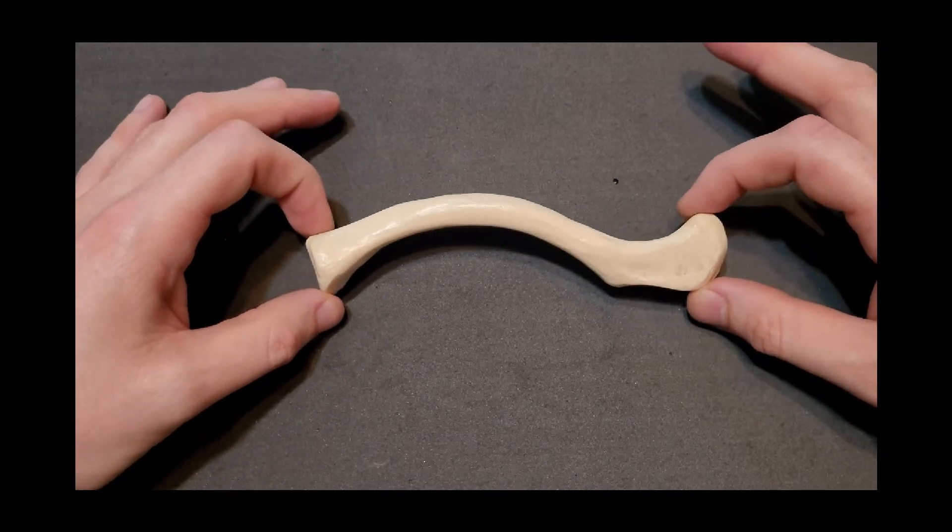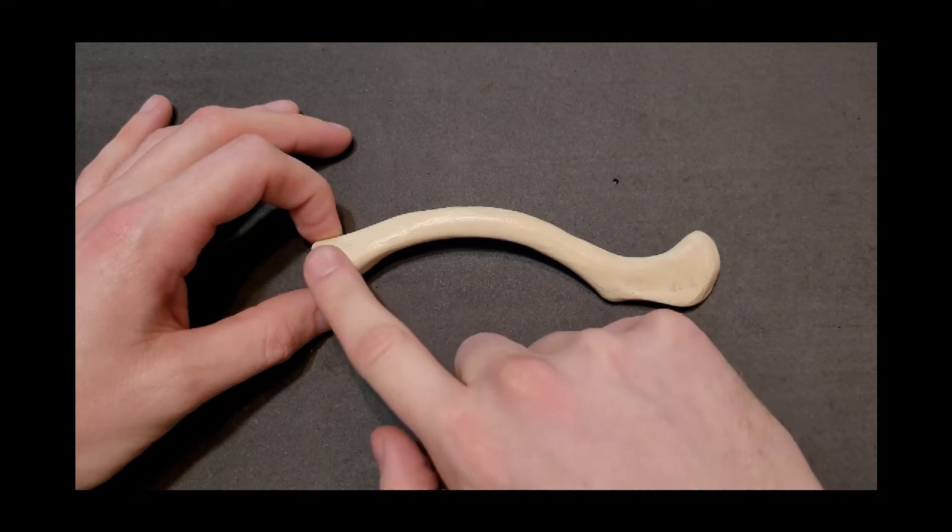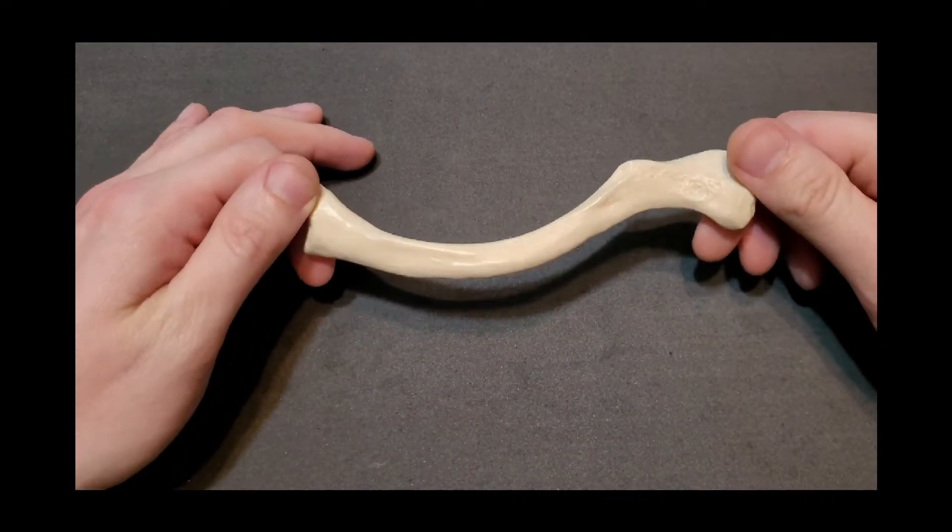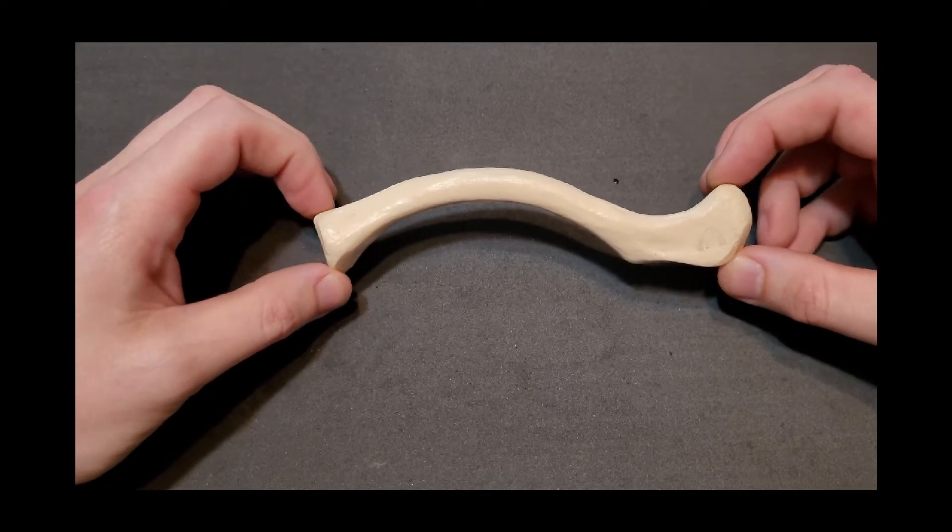As you can see the clavicle here has an interesting shape to it. A lot of times this is described as an S shape. That's something that's really unique and able to distinguish this bone because we really don't have many bones in the body that look exactly like this.